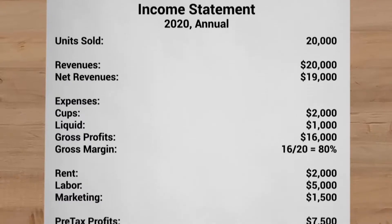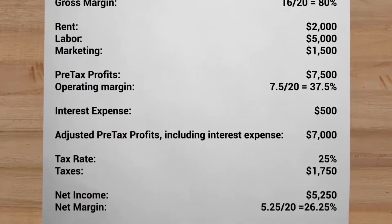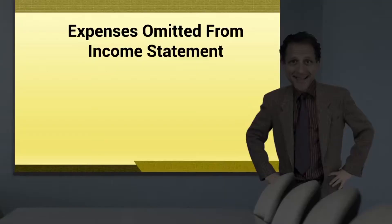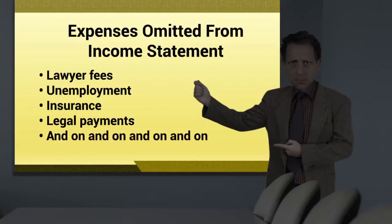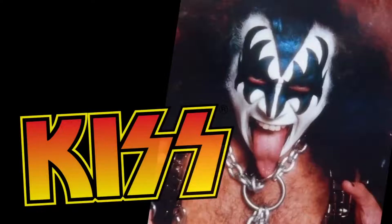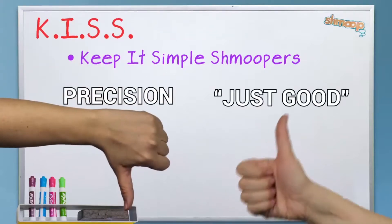Once again, let's go back to our little anemic income statement for our Lemonade Stands Are Us thing, with a few adjustments made. This statement is seriously anemic. It omits a ton of things that in real life you have to pay for when you run a real business, like lawyer fees, state unemployment fees, insurance, legal things, and on and on. Why do we omit them? KISS, not the rock band. Keep it simple, shmoopers. For now, precision is our enemy. Just good wins.